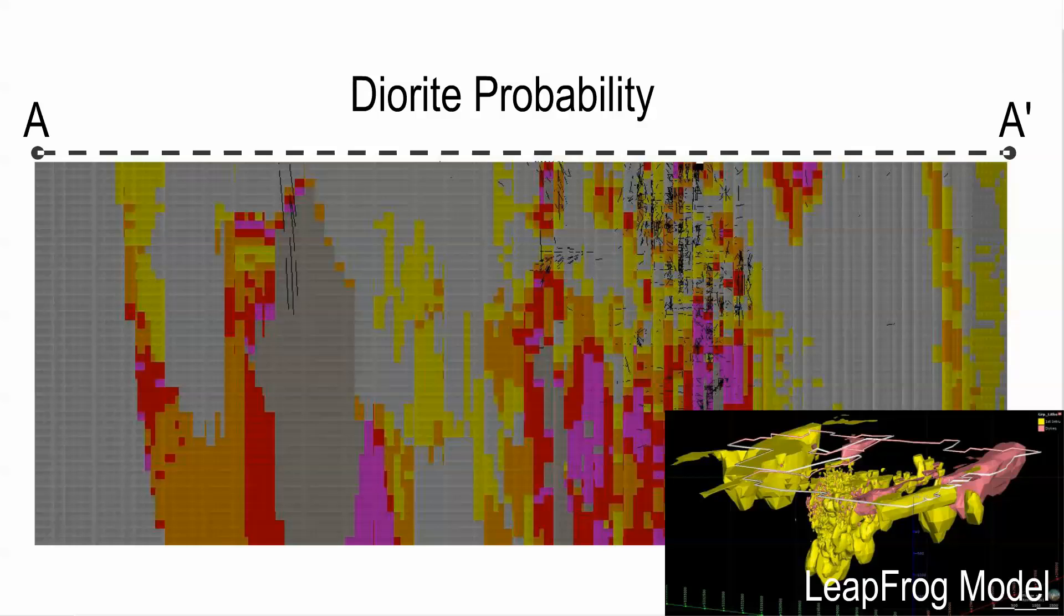To solve this, we used indicator kriging to assign a probability that each block contains each of the three key rock types.